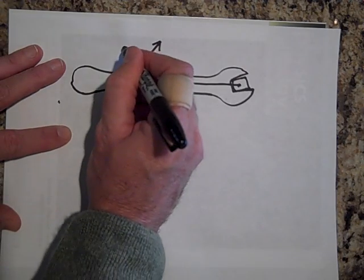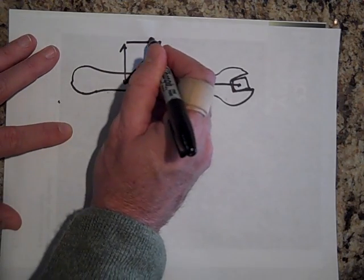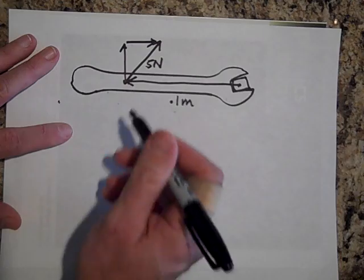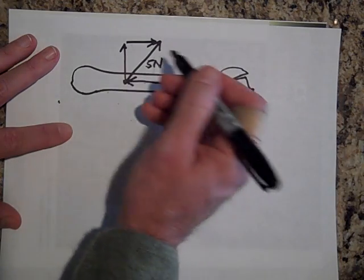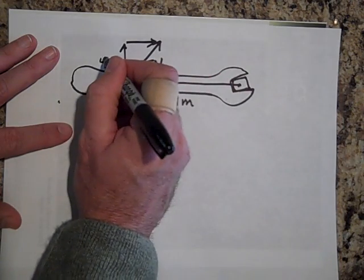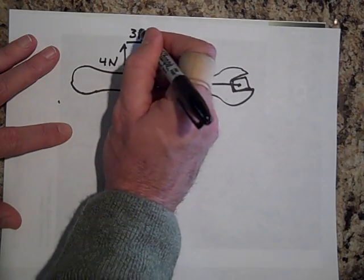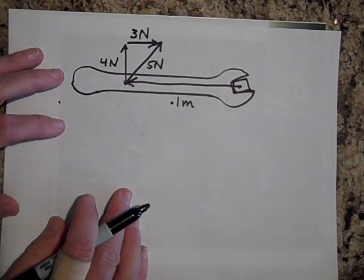And I'm going to break this into components. And I'm just going to tell you, just take my word for it that this is four newtons and three newtons. Let's just say that those are the two components.